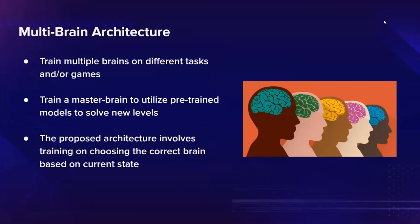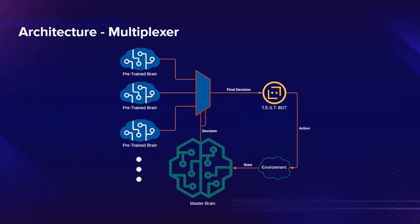As for the final architecture we adopted, we decided to go with what we call the master brain architecture. This is a mixture of experts approach where we train multiple brains on different tasks, levels, or games, each becoming an expert in a certain area. We then train a master brain to utilize these trained models in solving new levels. The master brain acts as the selection line of a multiplexer, deciding which model is best to use in a certain state. The decision is passed to the bot and the action is performed, resulting in a change in the environment. This new state is then passed back to the master brain and the process is repeated. This architecture performs much better than other methods because it allows a variety of models to be used together while dealing with the catastrophic forgetting problem.